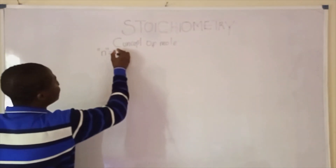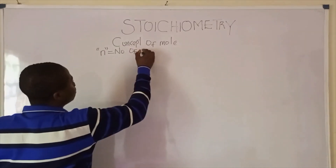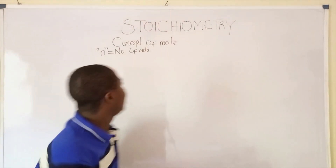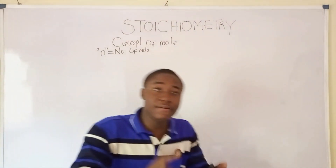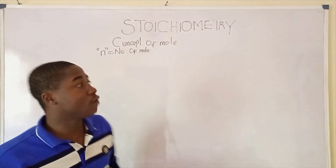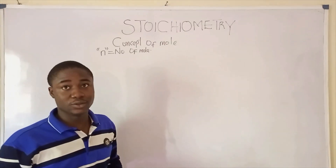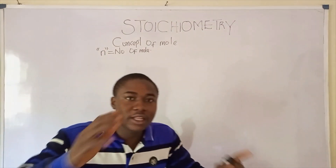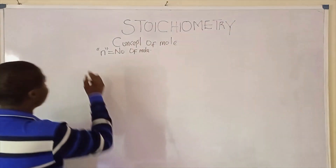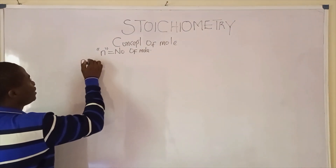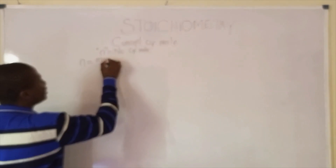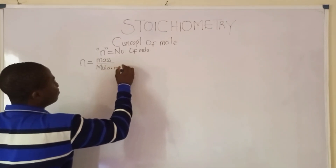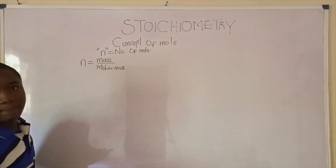n signifies number of moles. Number of moles has different formulas when solving problems on stoichiometry. The first formula is: number of moles (n) equals mass over molar mass.